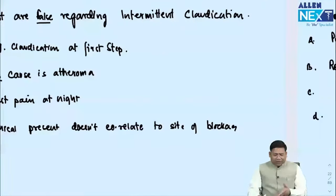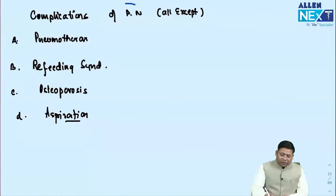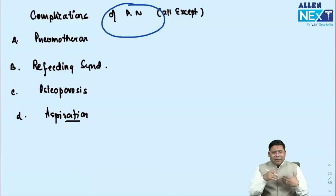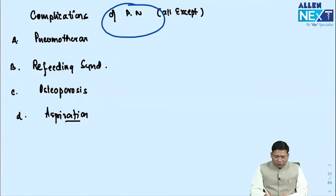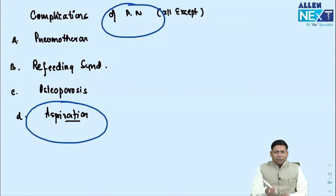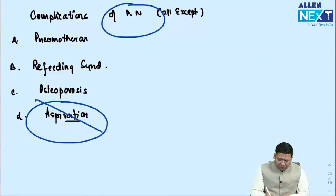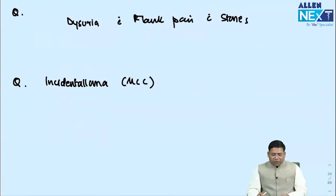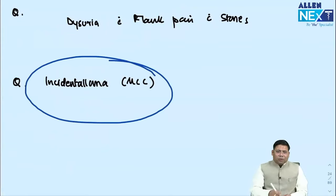Complications of parenteral nutrition: a simple question. Parenteral nutrition is given via IV route, not through the alimentary tract. Therefore, aspiration cannot happen with parenteral nutrition — aspiration is not a complication of parenteral nutrition.